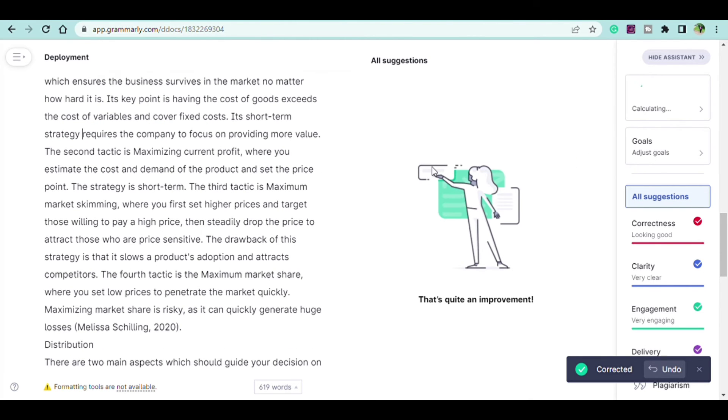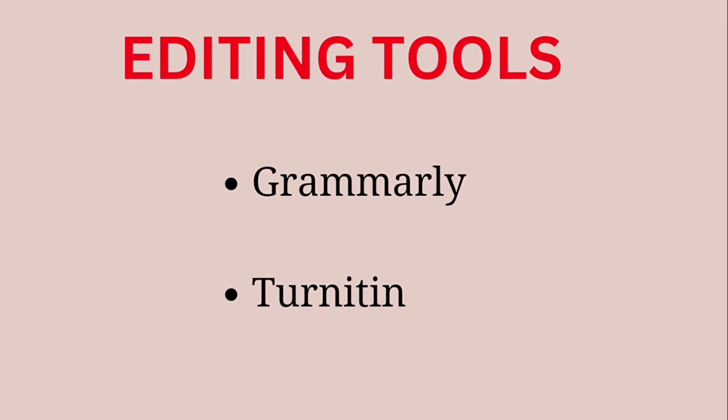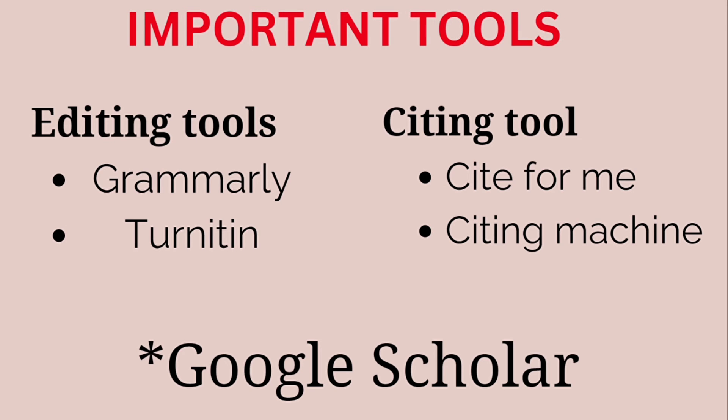That's how you use both Grammarly and Turnitin — it's super easy. Both of these two sites are user-friendly, meaning one step leads you to the other. It's easy to navigate both. Now, what are the prices? The prices for these two are normally super expensive, especially if you're a beginner, because you don't want to spend so much when you haven't yet started making money.